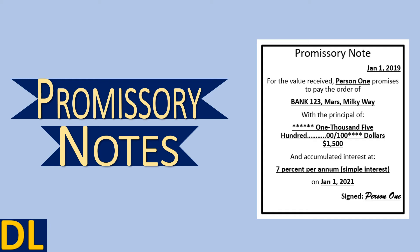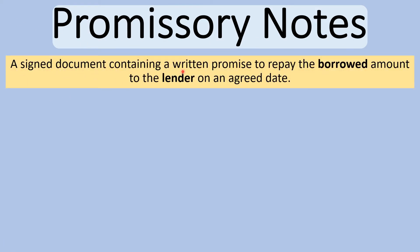Welcome back to Dolphin Learning. Today we're going to look at promissory notes. I'll quickly explain what a promissory note is and then go through some basic examples. A promissory note is a signed document containing a written promise to repay the borrowed amount to the lender on an agreed date — like an IOU situation where a person borrows money and writes up an IOU for a set amount on a set day.